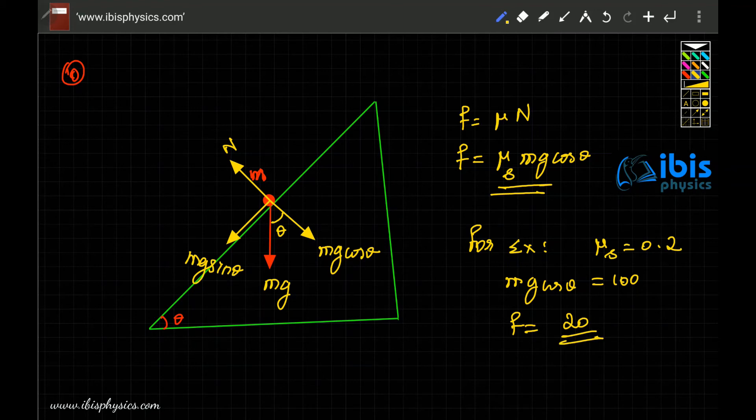Then if mg sin theta is equal to 10 Newton, then frictional force is also 10 because the friction will only oppose the relative motion. If the downward force is mg sin theta equal to 10, the frictional force cannot exceed 10. If frictional force is 20, it means it will move upward, so that cannot happen.